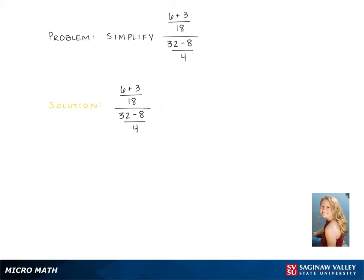After rewriting the problem, our first step is simplifying the numerator by adding 6 plus 3, which gives us 9 over 18. Then taking 32 minus 8 gives us 24 over 4.